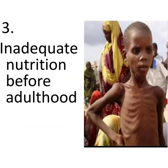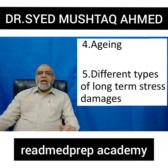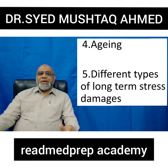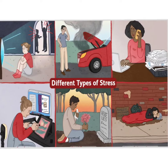Number three is inadequate nutrition before adulthood. Number four is aging. Number five is different types of long-term stress damages, which may be domestic, at work, or in routine social activities.